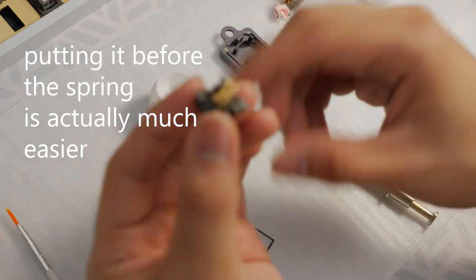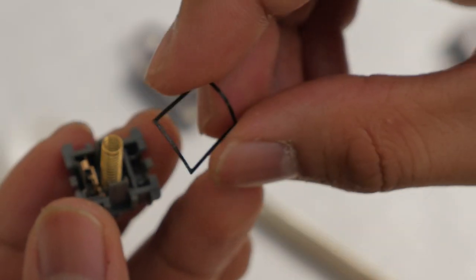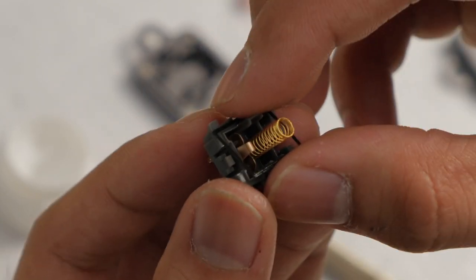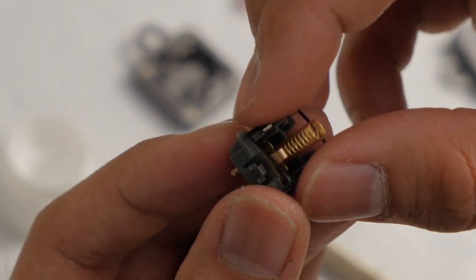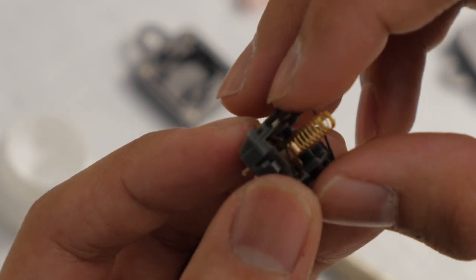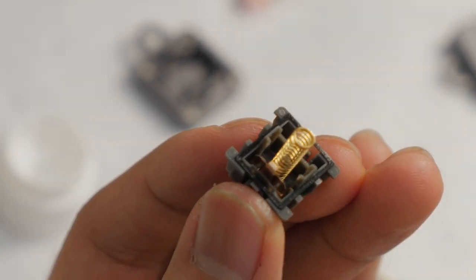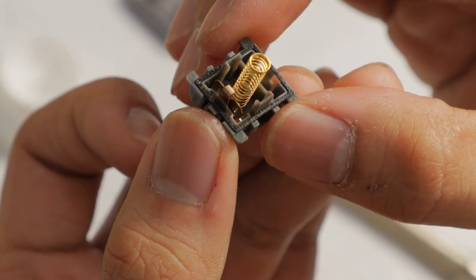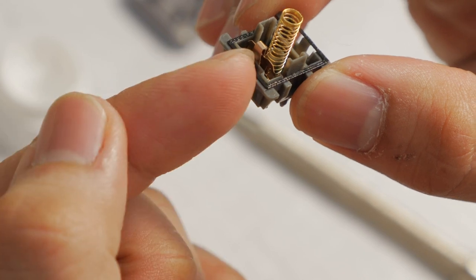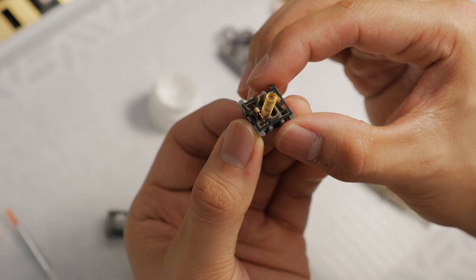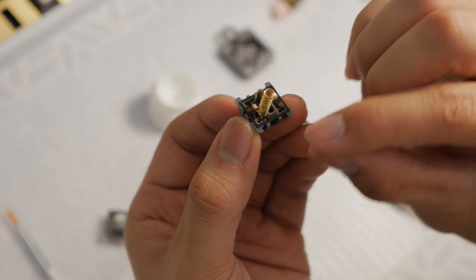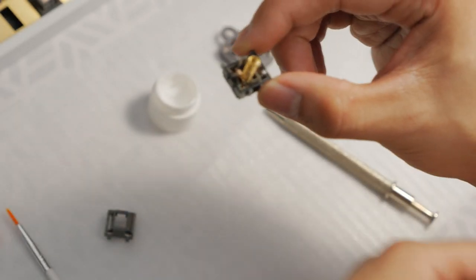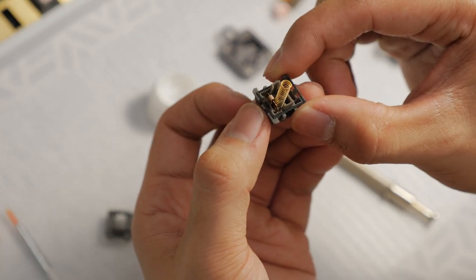During this step, if you're adding films, this is when you would add them. This is a film, a thick film from Jinra. So I'll slide in like that. That is the bottom housing. That is a spring. And that's a film. The intent of the films is to minimize the gap between the bottom housing and top housing, creates better sound and also reduces stem wobble.